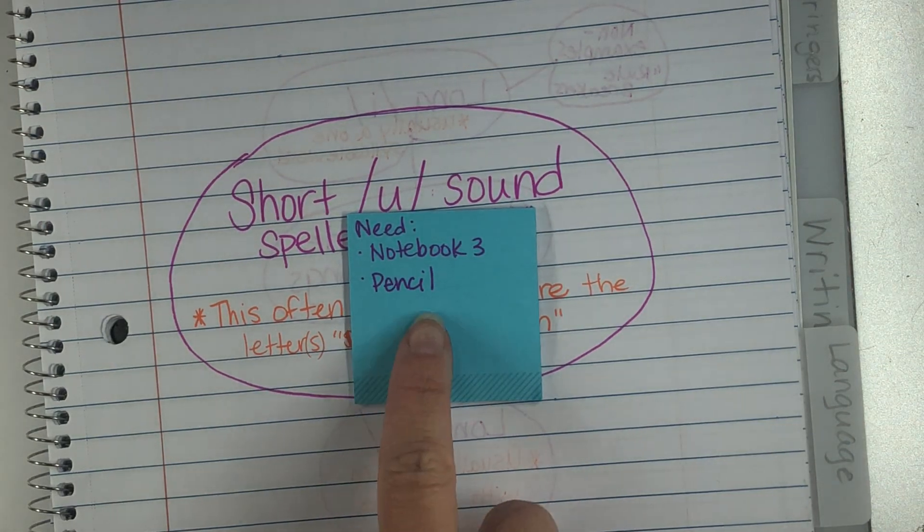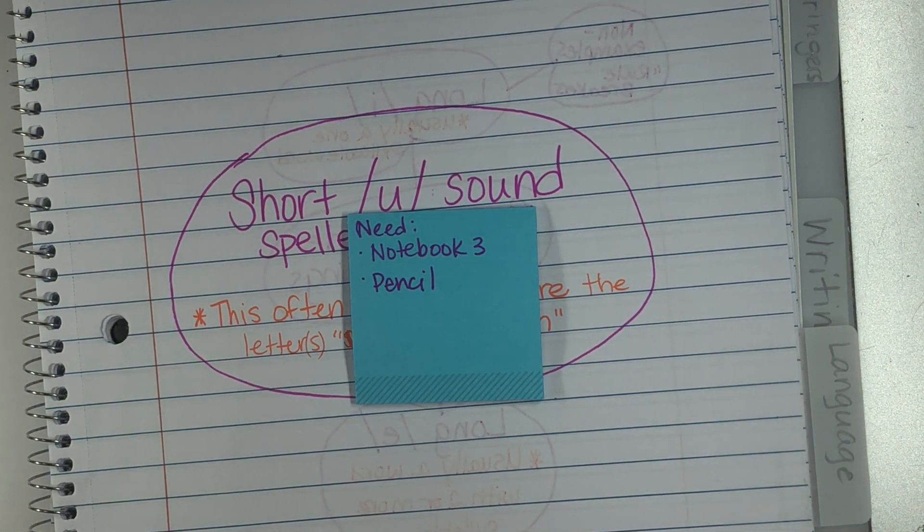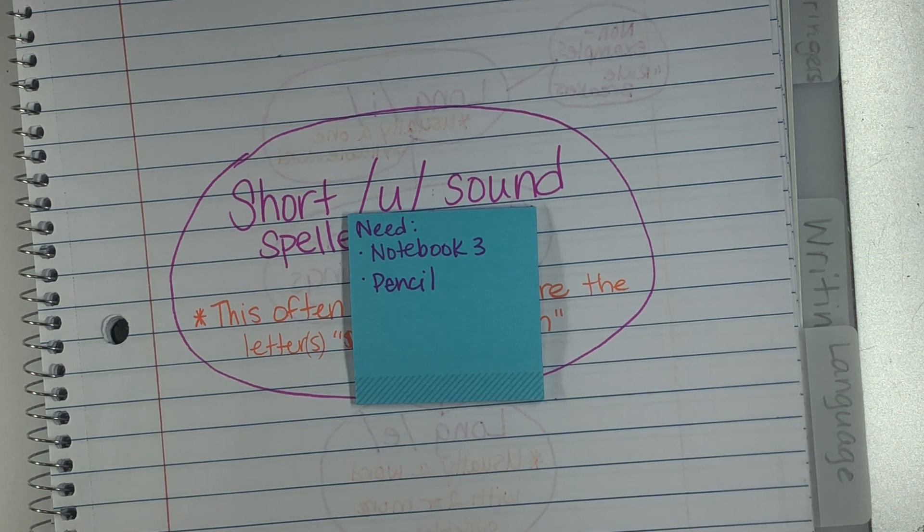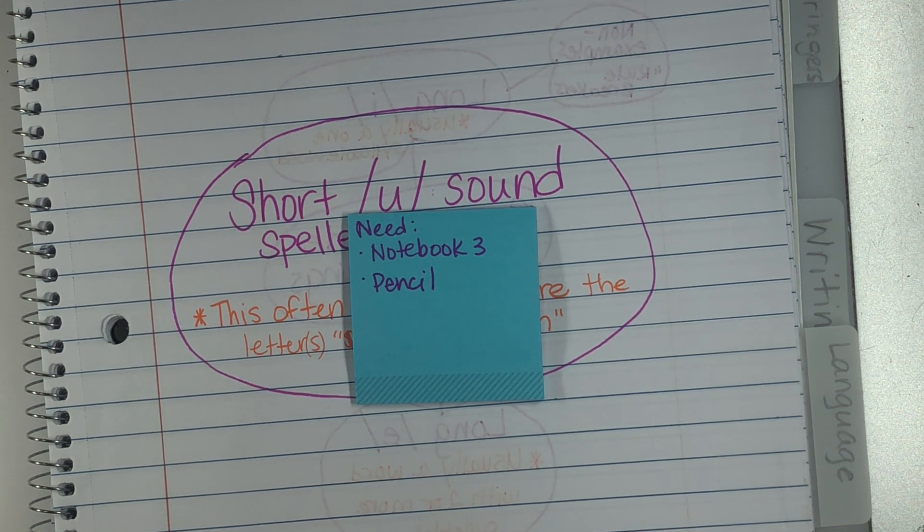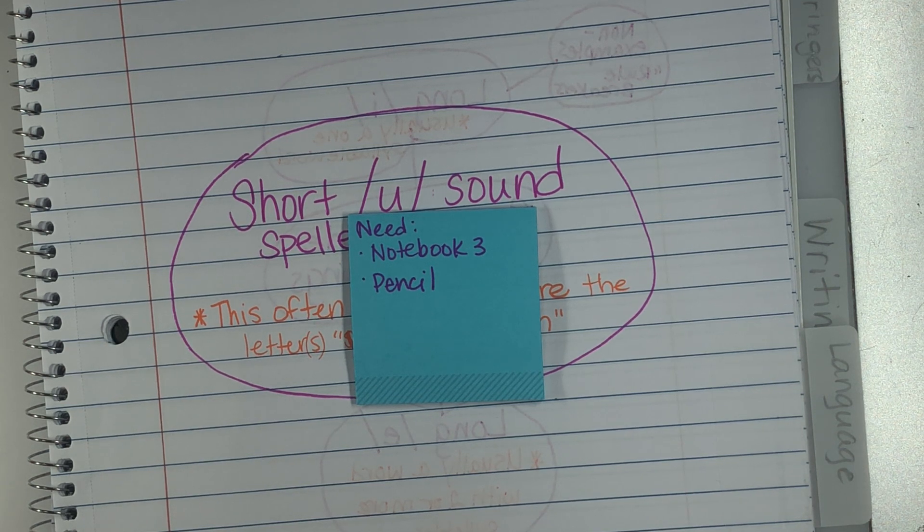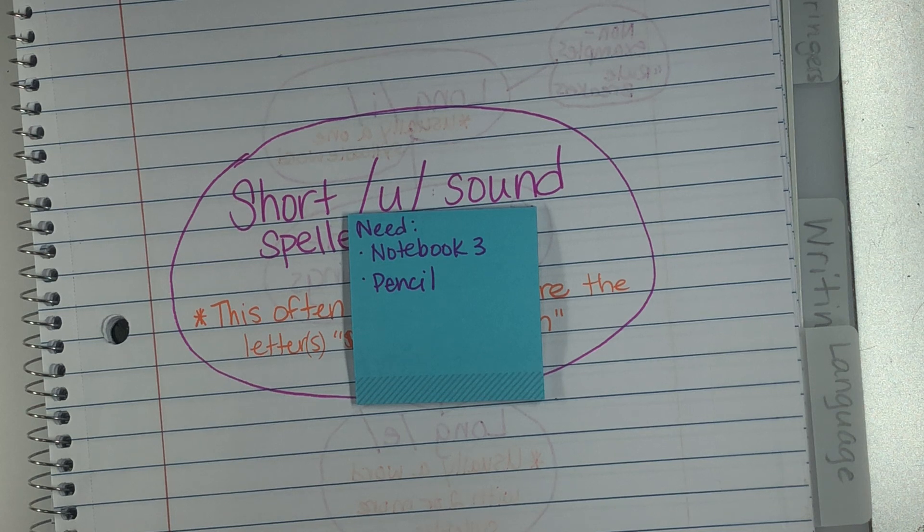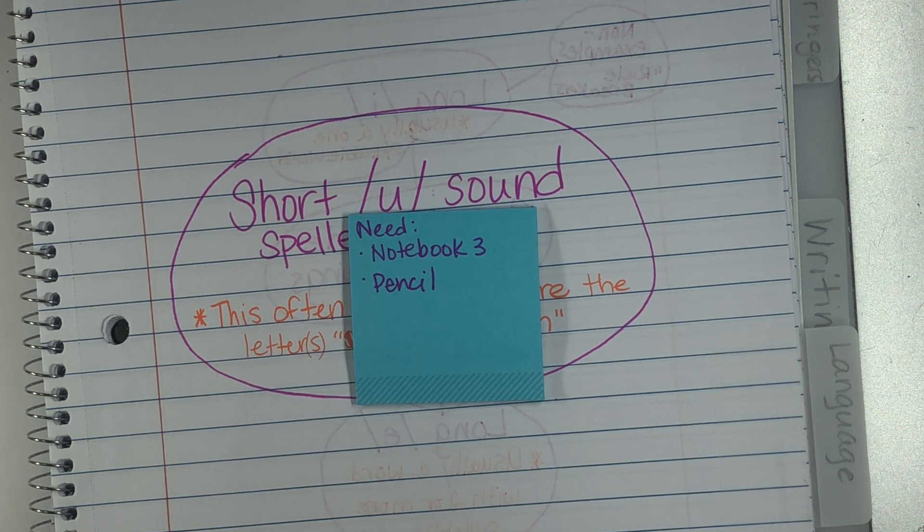All right, these are the things that you're gonna need for today's language arts lesson. You're gonna need notebook number three and a pencil. Optional would be some colored pencils or crayons, but I would leave that until the very end. I don't want you doing anything with color until everything is done with a pencil.